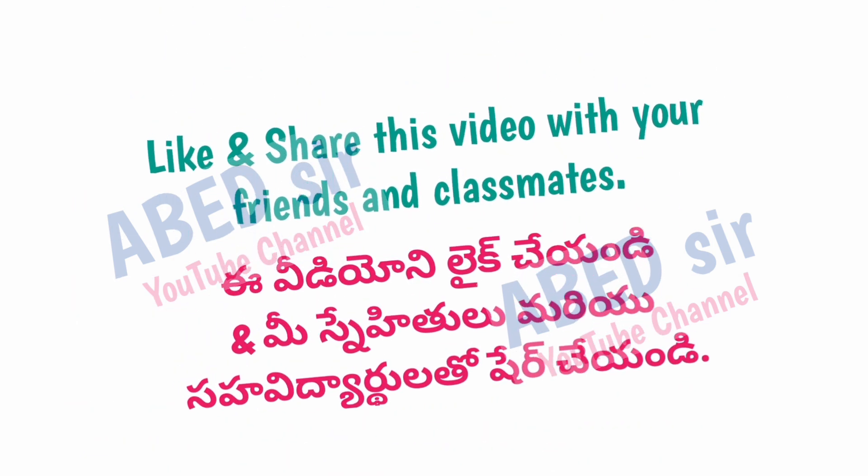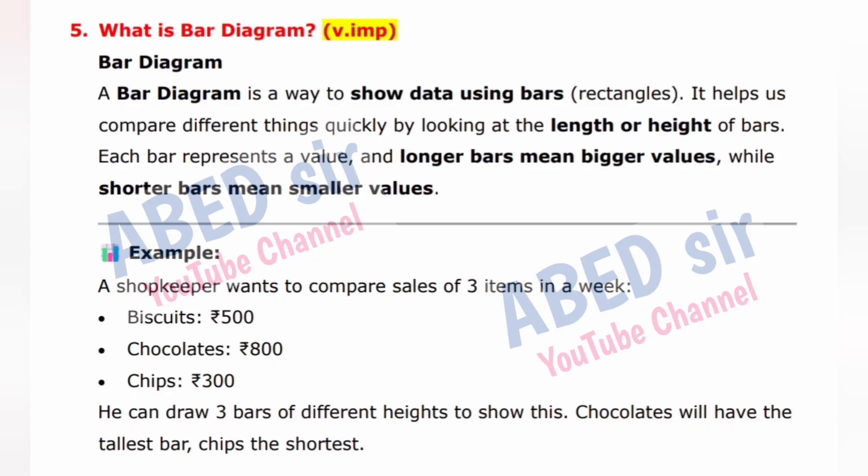Next important short question: What is a bar diagram? A bar diagram is a way to show data using bars or rectangles. It helps us compare different things quickly by looking at the length or height of bars. Each bar represents a value — longer bars mean bigger values, shorter bars mean smaller values. Example: A shopkeeper compares weekly sales: biscuits 500 rupees, chocolate 800 rupees, chips 300 rupees. Chocolate will have the tallest bar, chips the shortest.